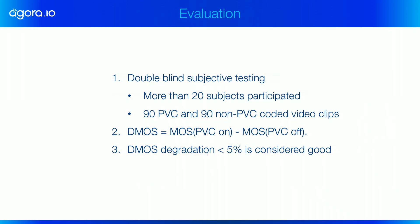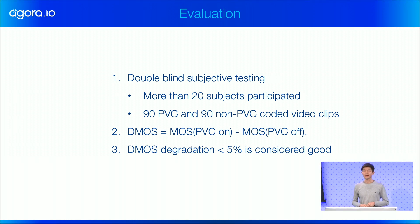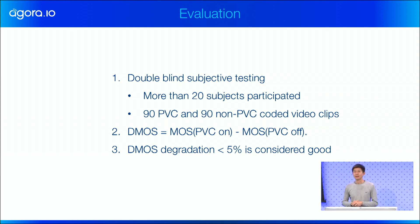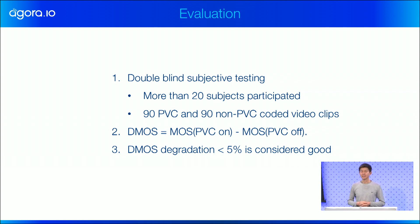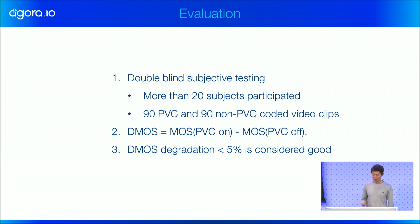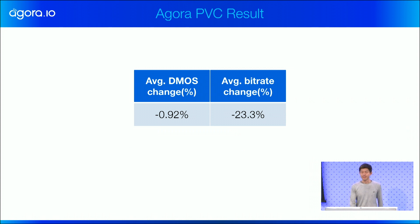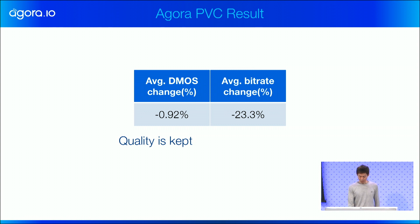I'd like to spend a minute talking about how we evaluate this perceptual video encoding. We use double-blind testing and invite more than 20 subjects — untrained subjects, though some may be trained; we don't care. We provide 90 PVC-coded video clips and the 90 corresponding non-PVC-coded video clips, asking them to give a mean opinion score, and then the difference of the MOS scores is calculated. In the literature, a degradation of 5% is usually considered very good. Here are our results: the average DMOS is less than 1%, which means the quality is preserved, and the average bitrate dropped by more than 23%. So we get more compression — that 30% target, right?